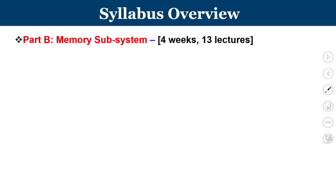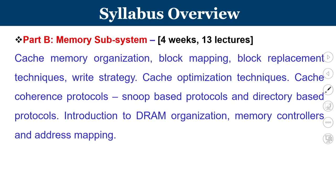Part B covers the memory subsystem, taking roughly four weeks. We introduce cache memory organization from basics, covering mapping, block replacement techniques, and write strategies, followed by cache optimization techniques. For multicore processors, handling memory coherency is a major challenge, so we will learn about cache coherence protocols including snoop-based and directory-based protocols. We then move to primary memory, covering DRAM organization, memory controller functions, and address mapping.